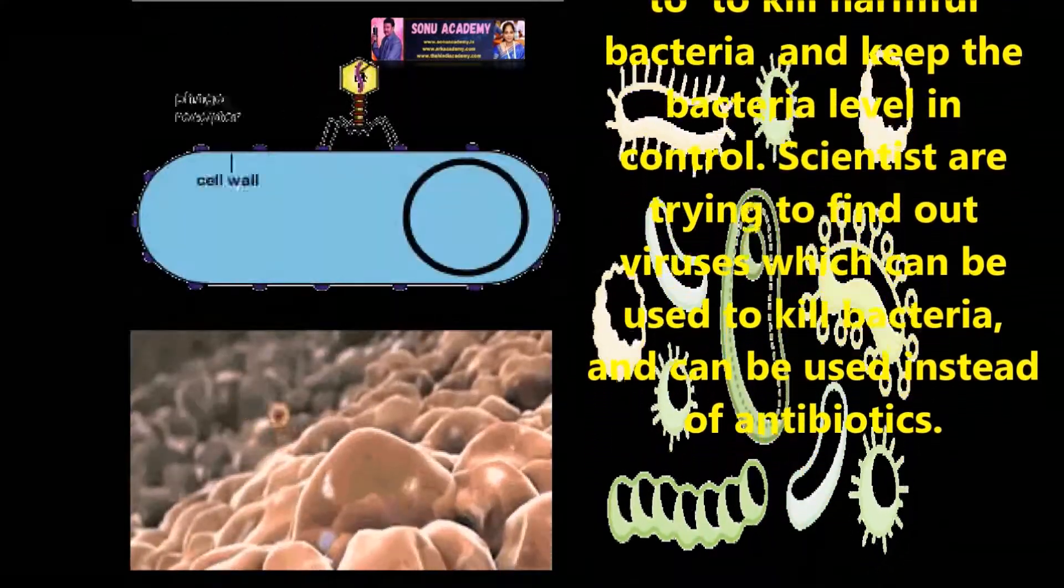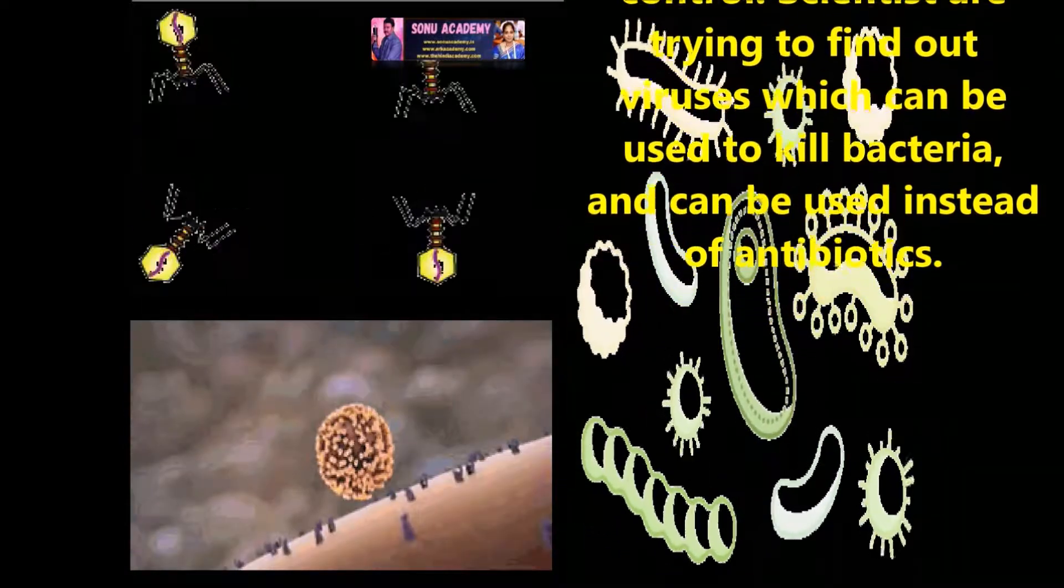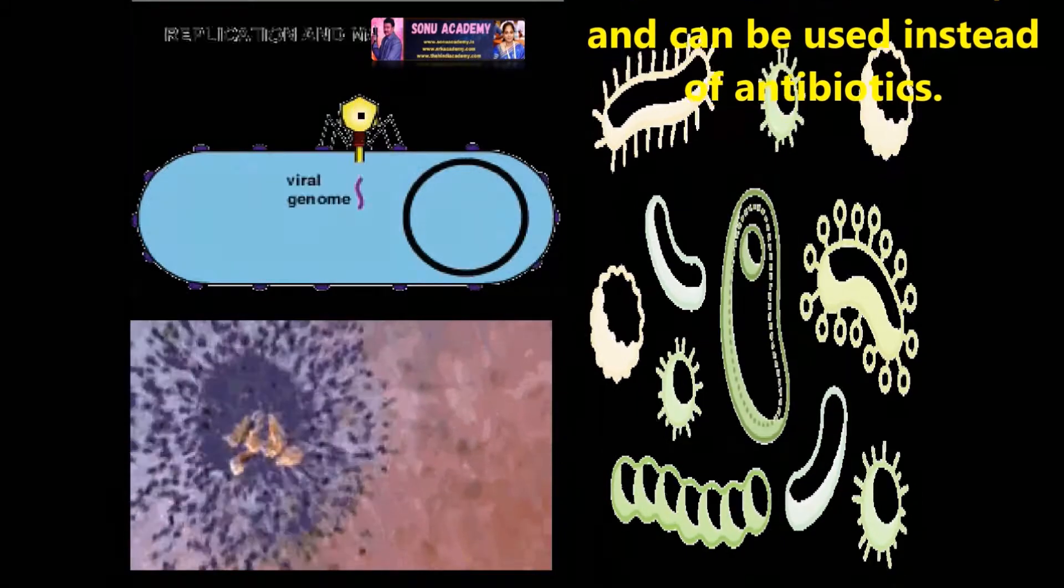Bacteria phages in the sewage have the ability to kill harmful bacteria and keep the bacterial level in control. Scientists are trying to find out viruses which can be used to kill bacteria and can be used instead of antibiotics.